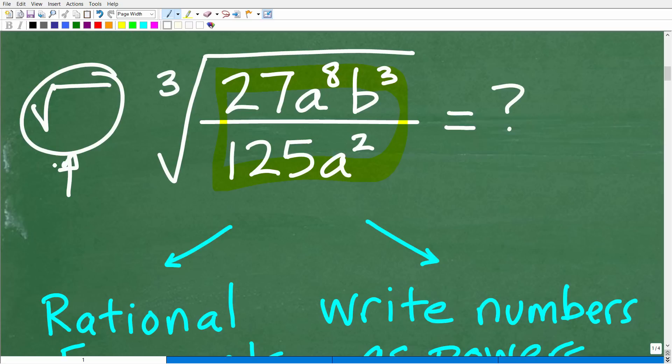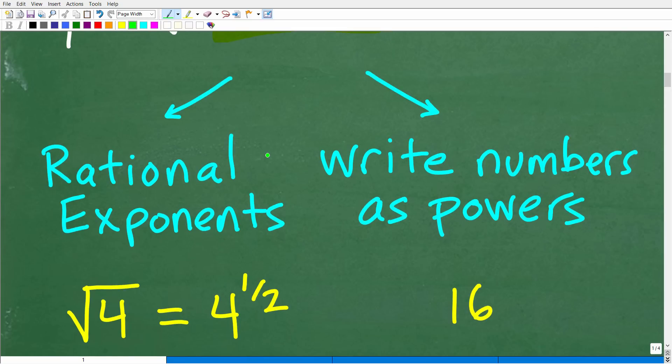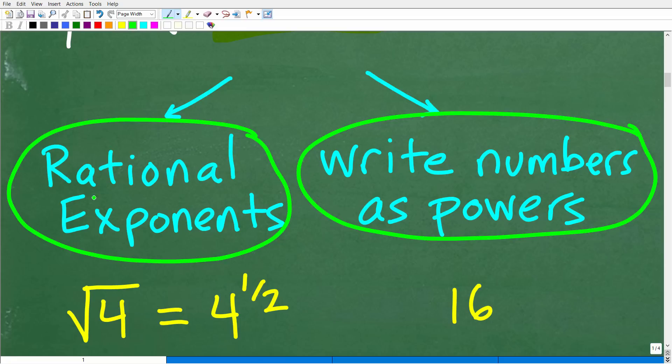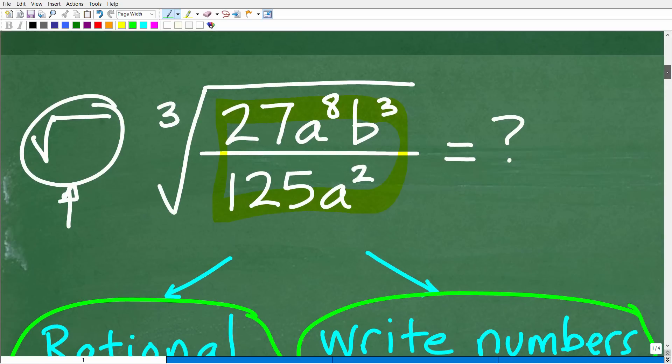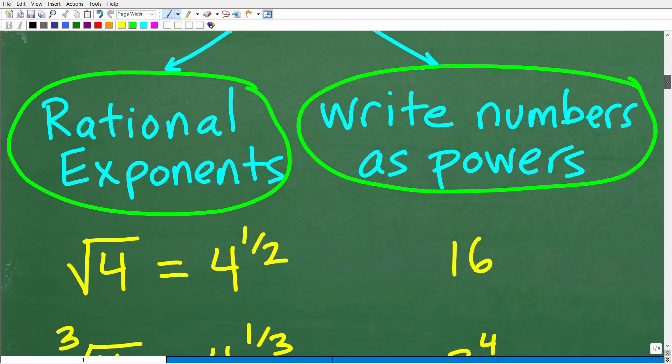So before we tackle this problem, we want to make some observations. And here is the strategy that we're going to want to understand. Basically, I kind of break this up in two components. You want to be thinking about two big things here, two big strategies. And the first is called rational exponents. And the next thing is we want to write numbers as powers. So when you're faced with this type of question, you want to be thinking about these strategies right here.